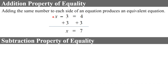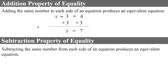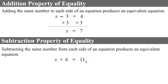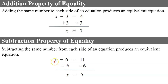Now let's talk about the subtraction property of equality. It states that subtracting the same number from each side of an equation produces an equivalent equation. Here I have the equation x plus 6 is equal to 11. I want to isolate x, so the inverse of add 6 is to subtract 6. Using the subtraction property of equality, if I subtract 6 from the left side, I must also subtract 6 from the right side. This creates a zero pair, so the left side is equivalent to x. The right side, 11 minus 6, is 5. So my equivalent equation, x equals 5, is also my solution.